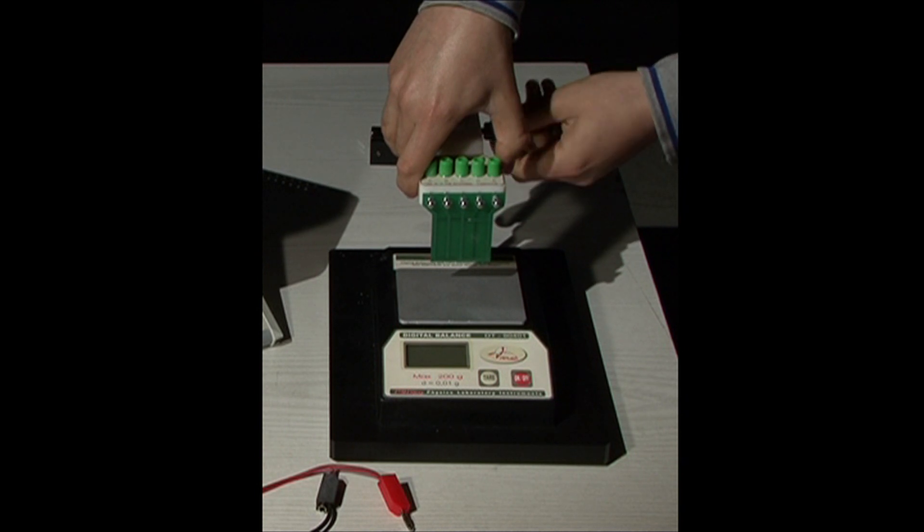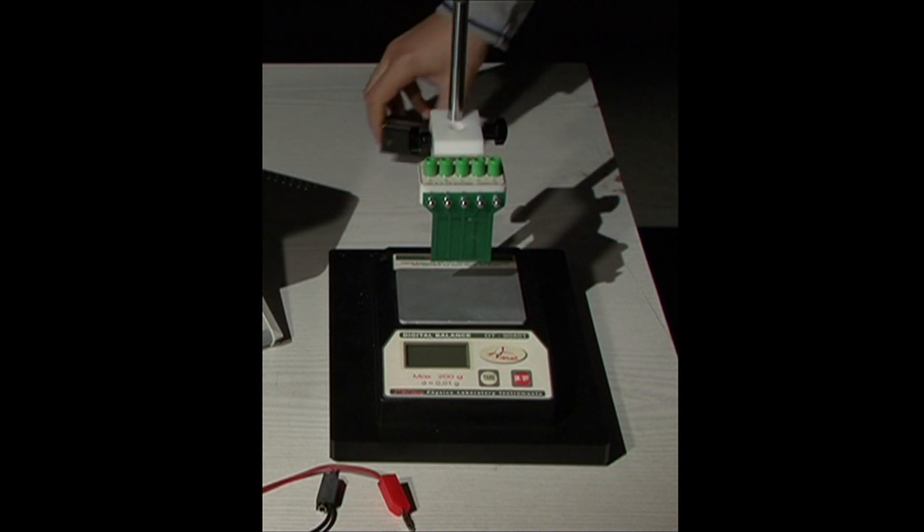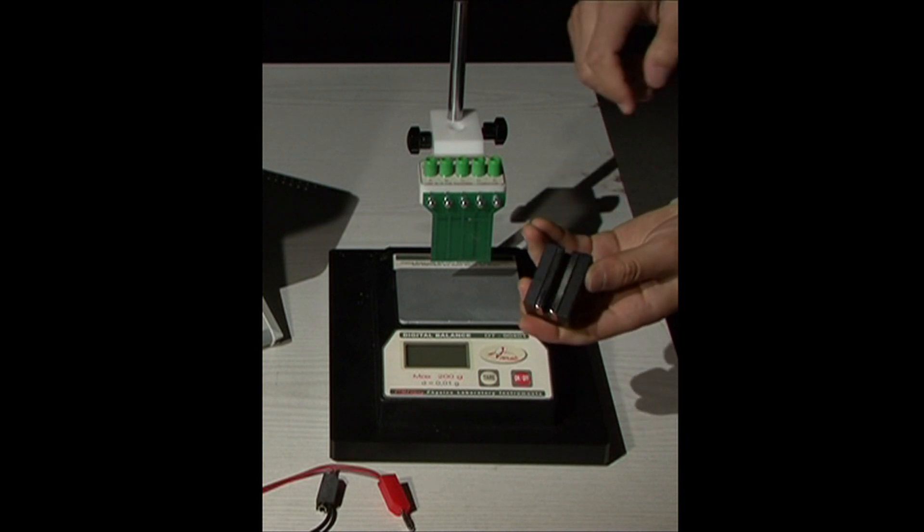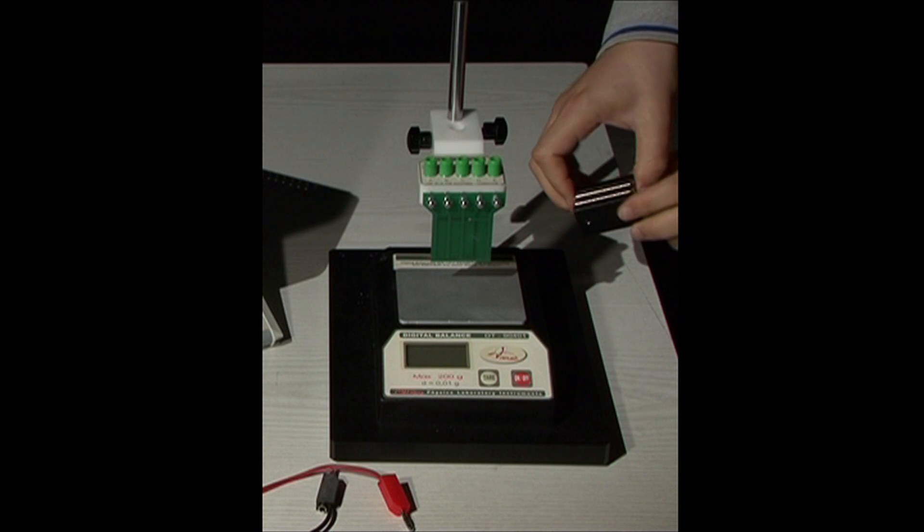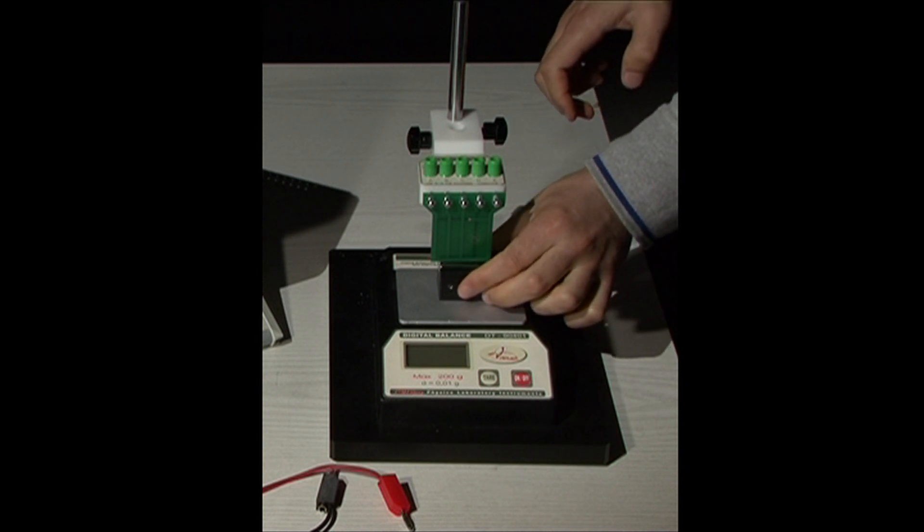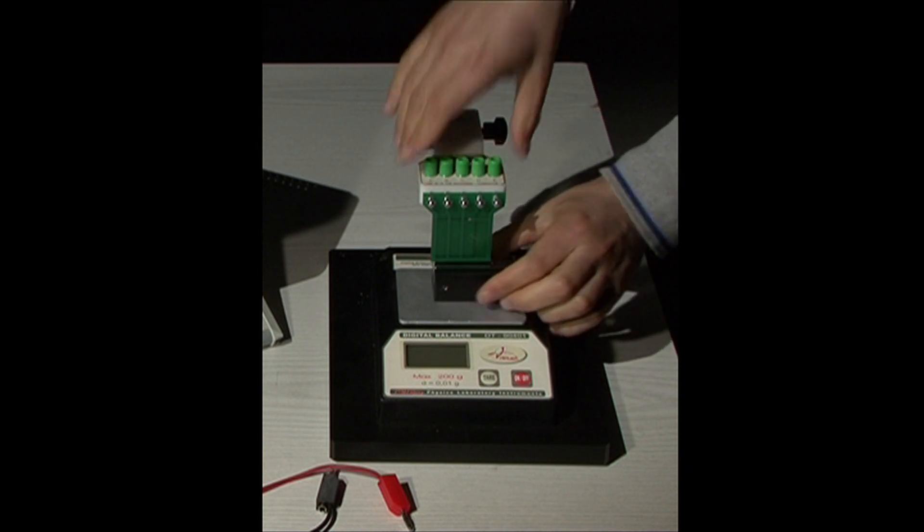You have two magnets fixed on an insulator. The wire affected by the magnetic force will be lying between these. Place the magnets and adjust the height of the wire.